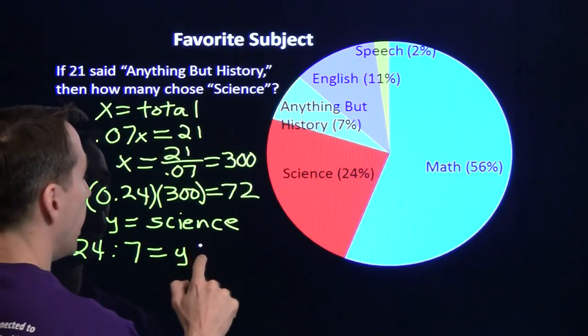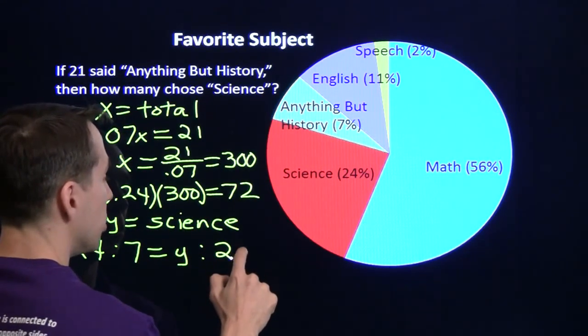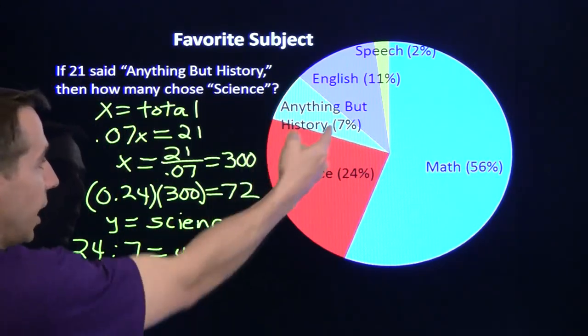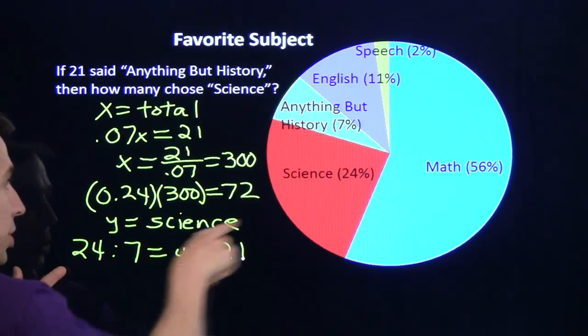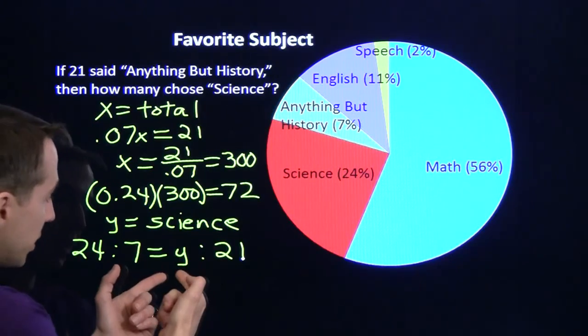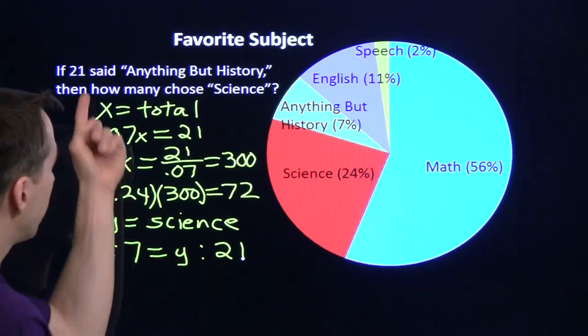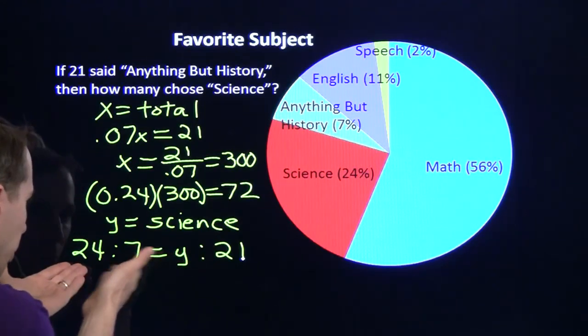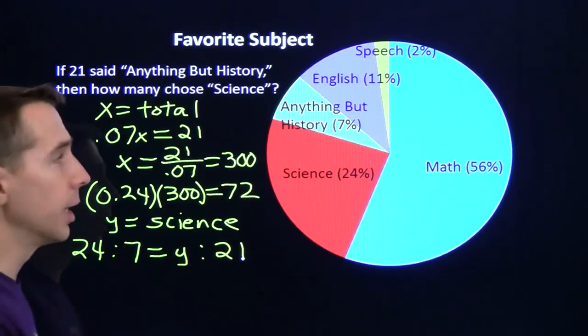And that's going to be equal to y to 21. Because y is the total number of students in science. We know that 21 said anything but history. This ratio comes from our percents, 24 to 7. And this is the actual number of students. Y in science, 21 said anything but history. And now we can just multiply both parts of this ratio by 3. We'll get 72 again.